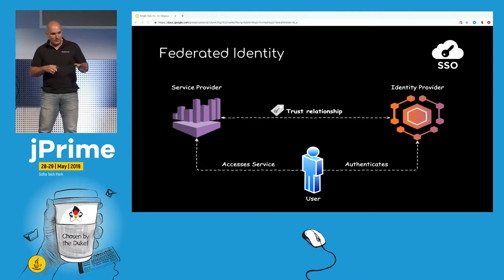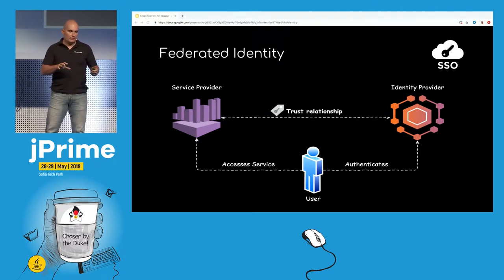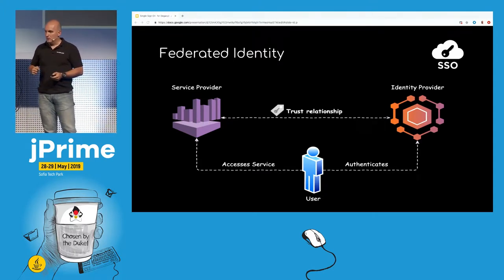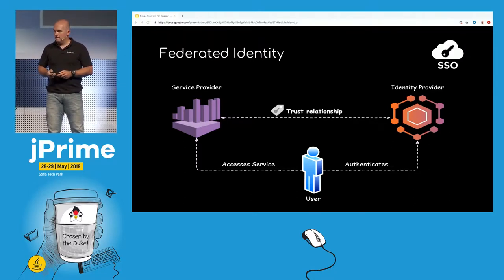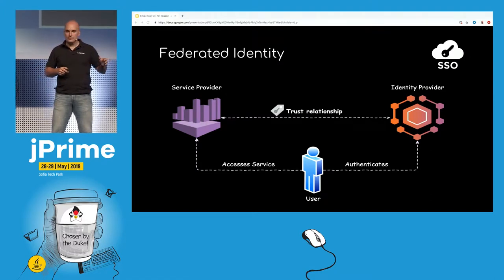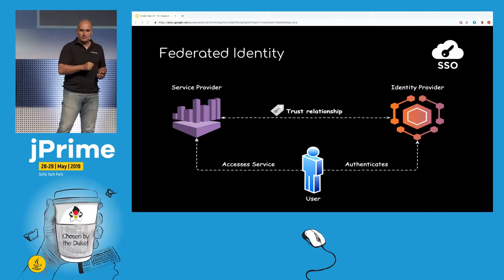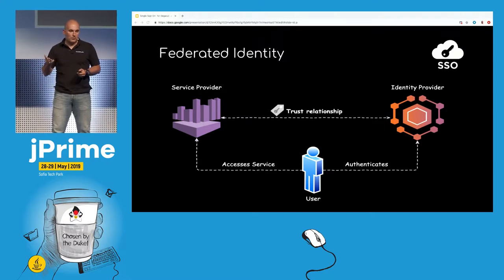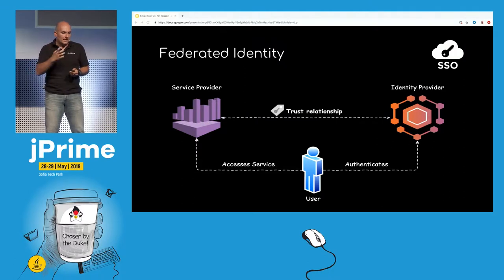Let me briefly explain how federated identity actually works. We have three entities: the user, the service provider, and the identity provider. When the user tries to access the service provider, the user's credentials are not requested by the service provider itself — instead, the service provider trusts the identity provider to properly identify the user.